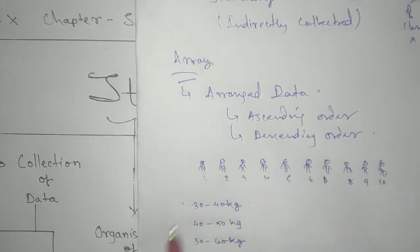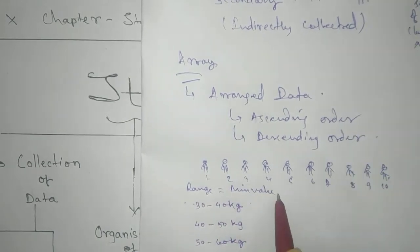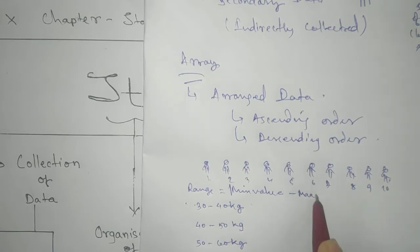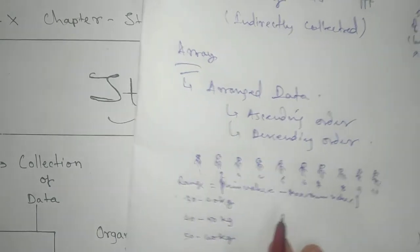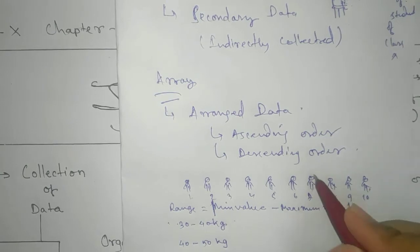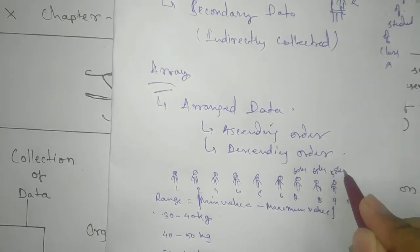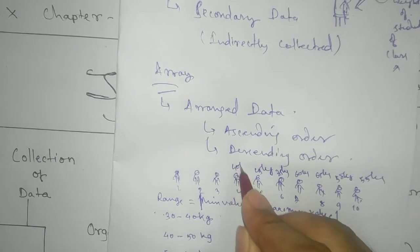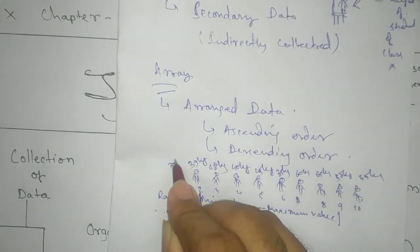First we need to get the range. Range means minimum value. There should be difference between minimum value and maximum value. Range we need. So that will be difference between maximum value. So we are using mod here, we will get positive. Now if this person has 60 kg, 65 kg, this one has 50 kg, 55 kg, 45 kg, 35 kg, 40 kg, 48 kg, 39 kg, and 30 kg. So here we are going to organize this one, we are going to arrange it in a group data.